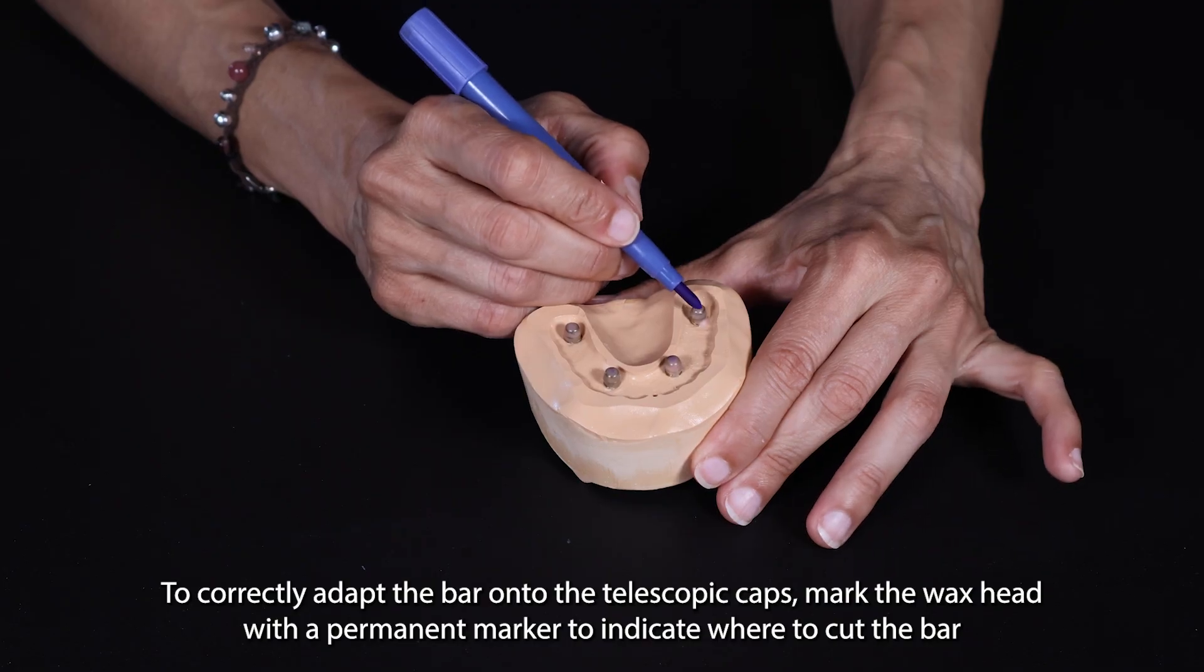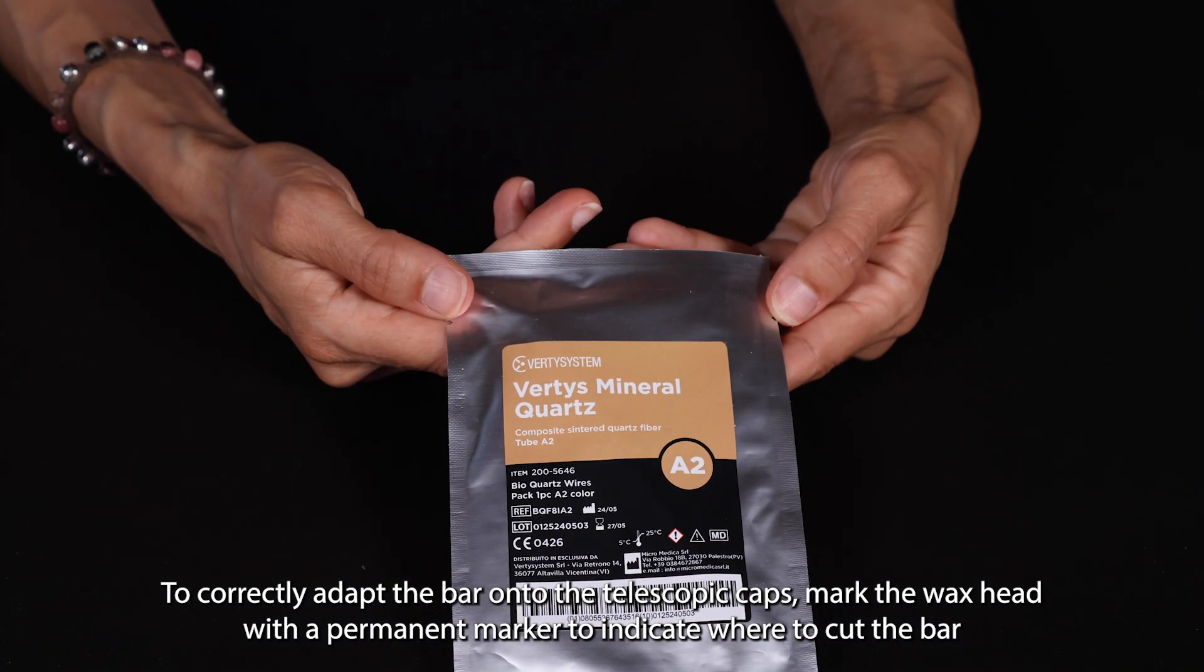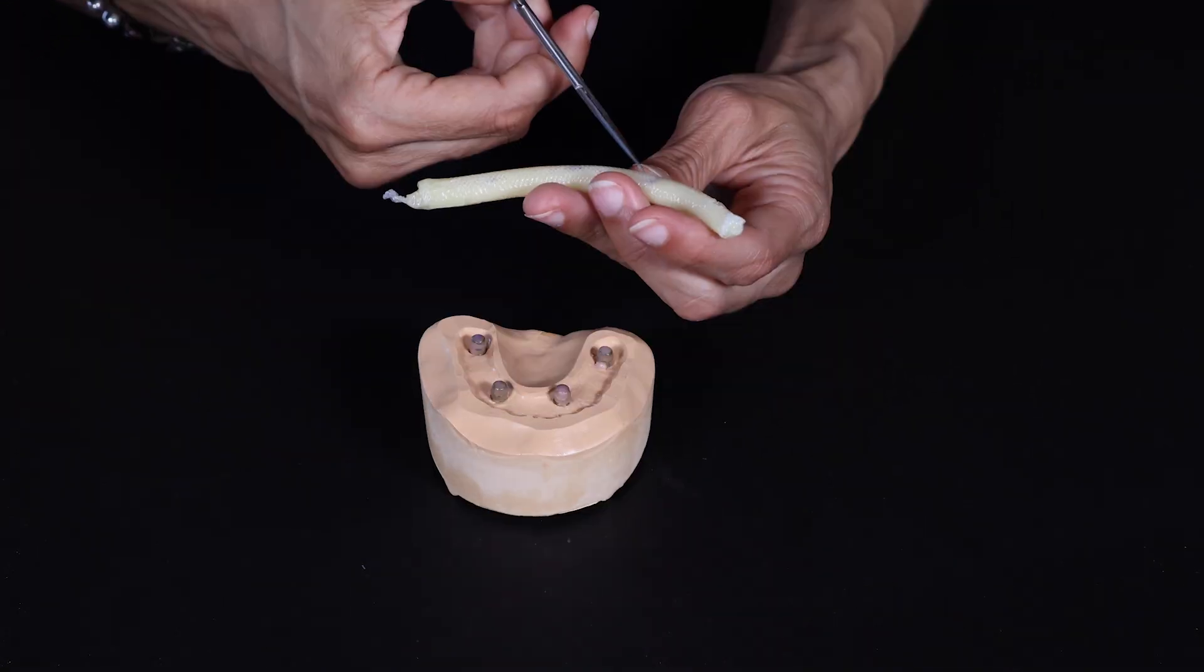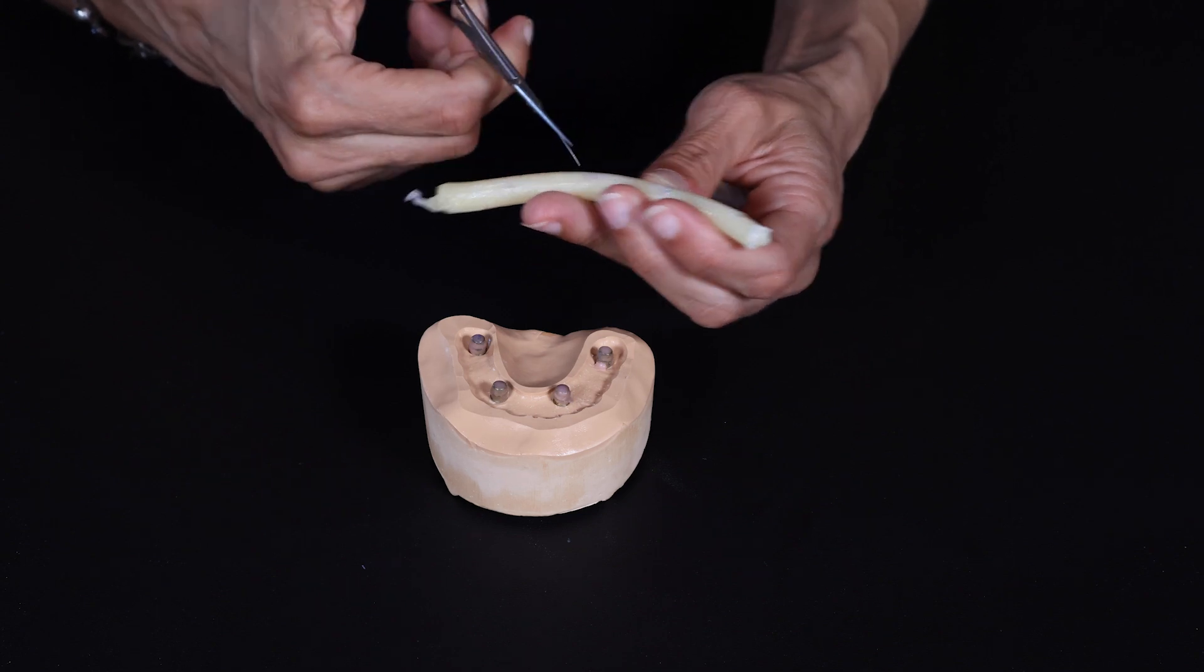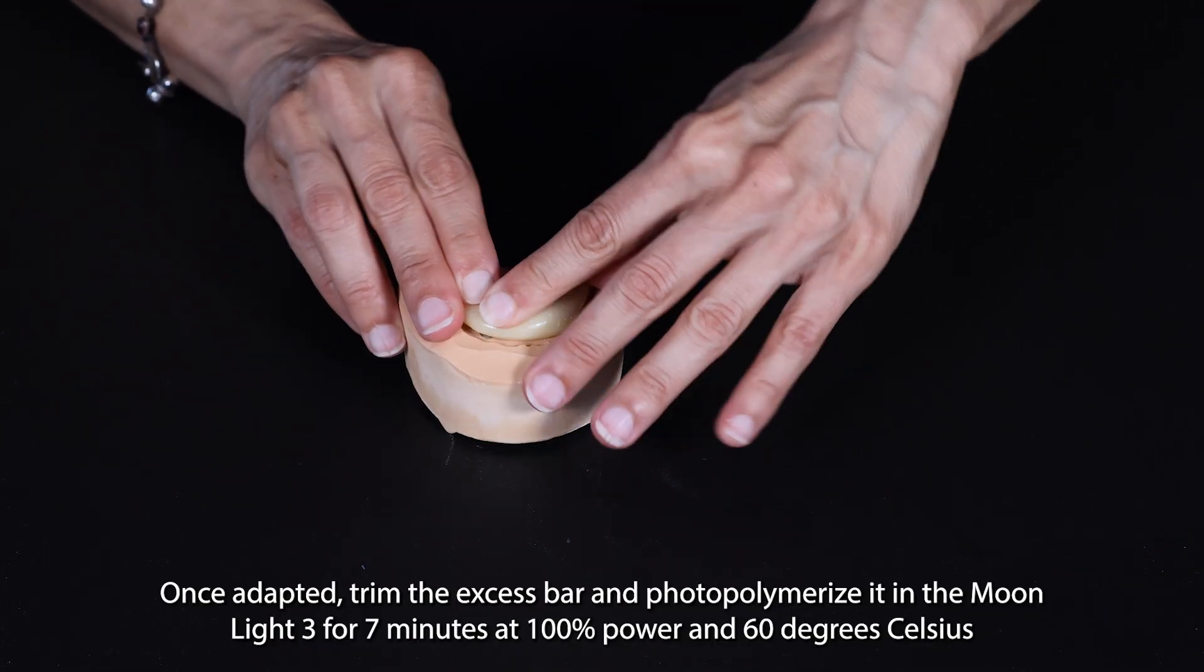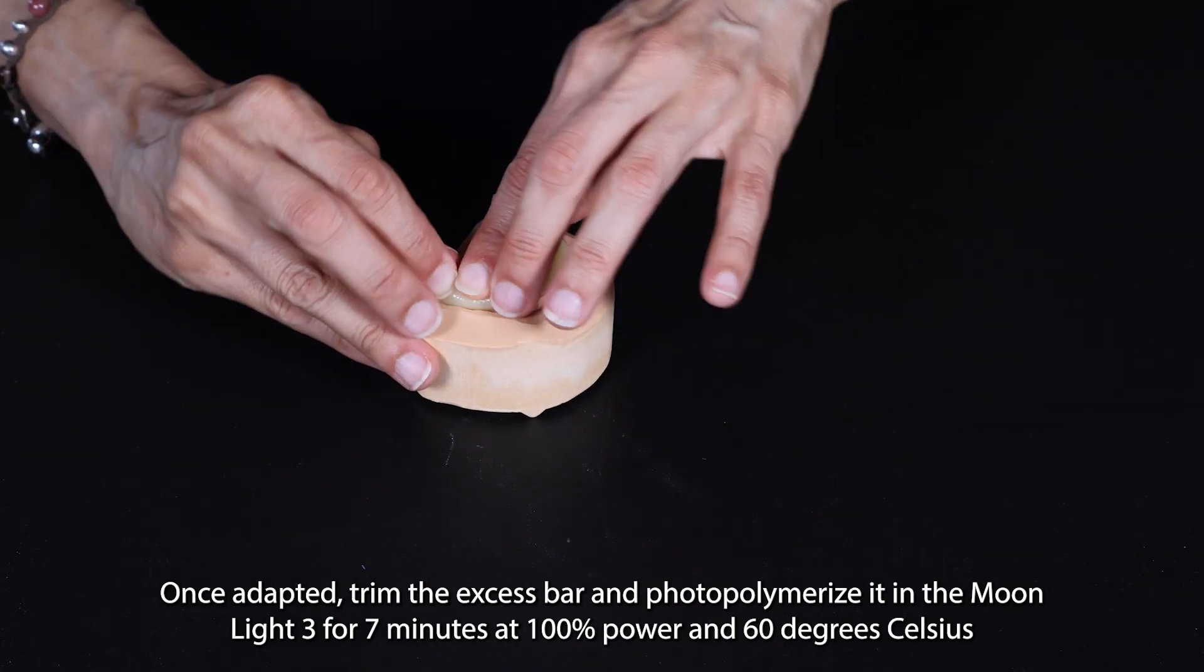To correctly adapt the bar onto the telescopic caps, mark the wax head with a permanent marker to indicate where to cut the bar. Once adapted, trim the excess bar and photopolymerize it in the Moonlight 3 for 7 minutes at 100% power and 60 degrees Celsius.